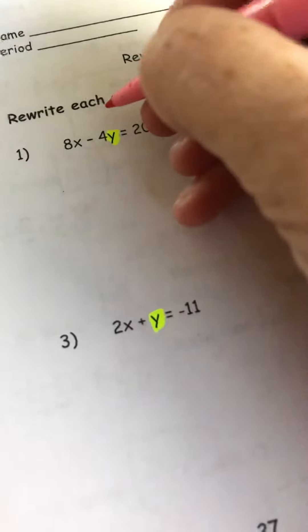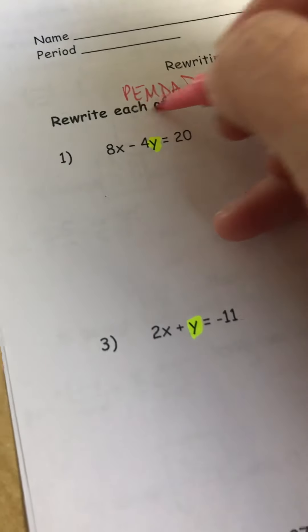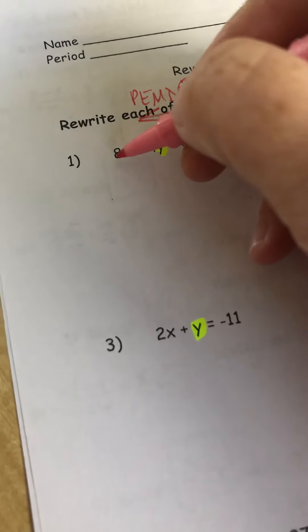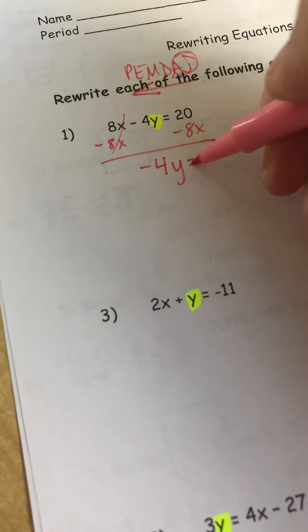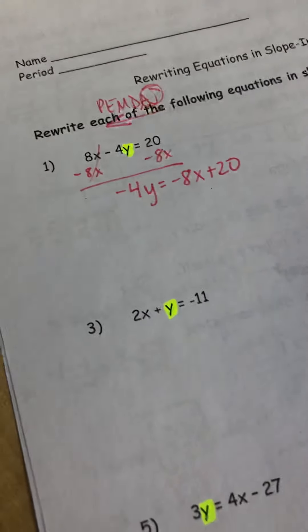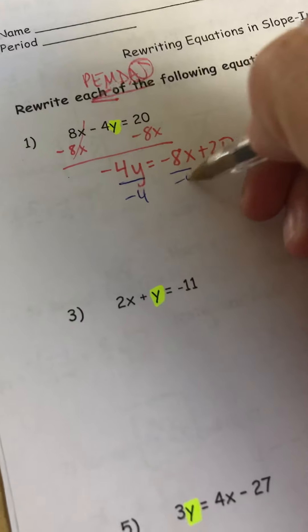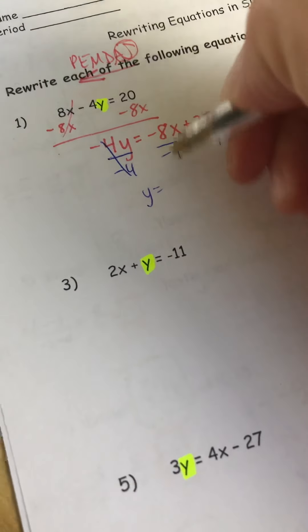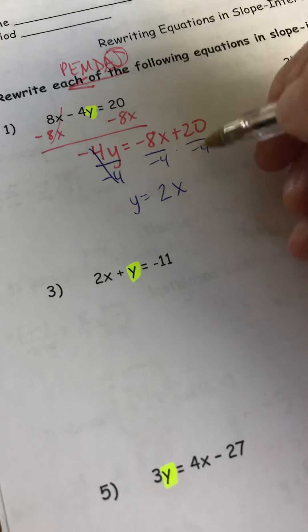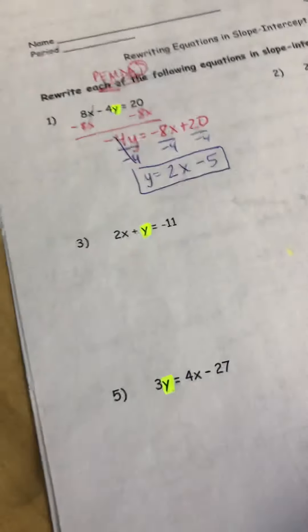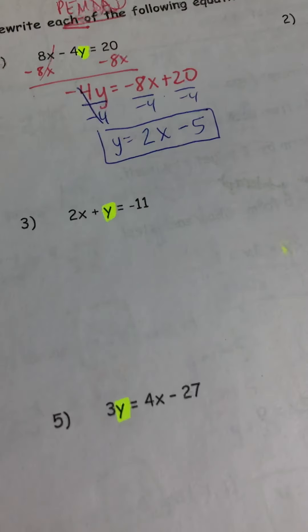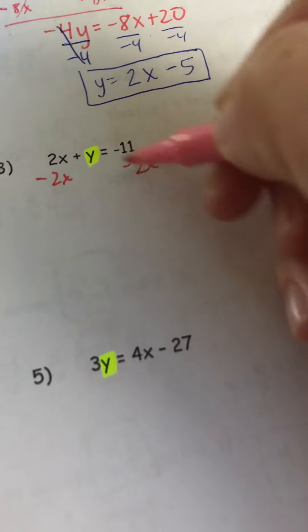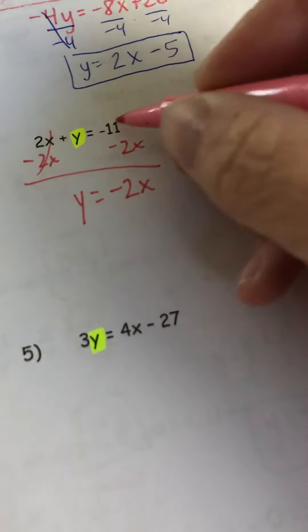Moving to the back page, I'll work through the first one. Working backwards like with order of operations — there's a positive 8x, so subtract 8x to the other side, giving negative 4y equals negative 8x plus 20. Divide everything by negative 4 to get y by itself. A negative over a negative is a positive, and positive 20 divided by negative 4 is negative 5. So y equals 2x minus 5. Now pause and try to solve the rest. For number 4, subtract 2x from both sides: y equals negative 2x minus 11.